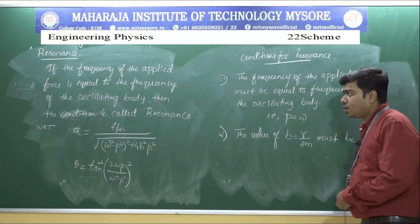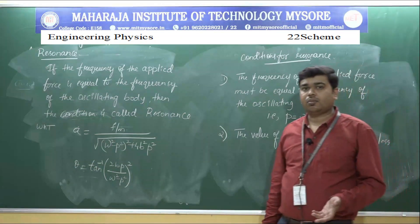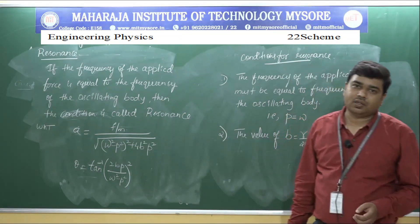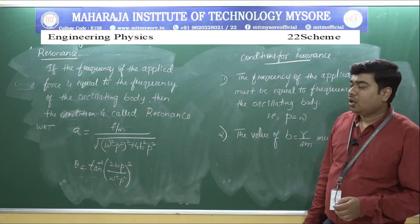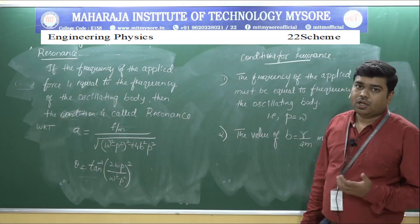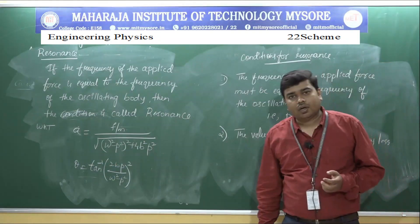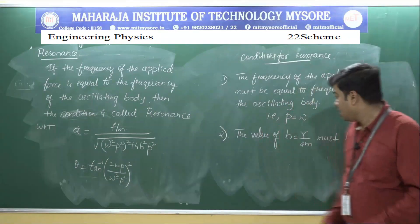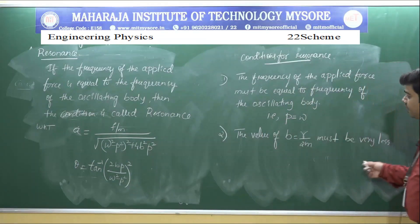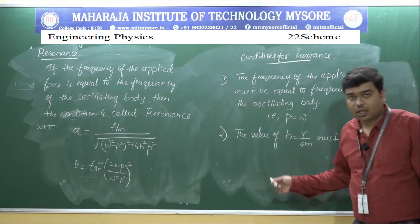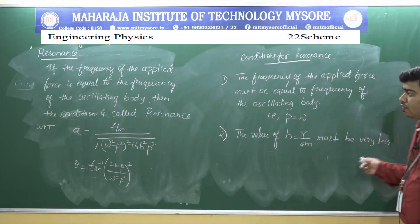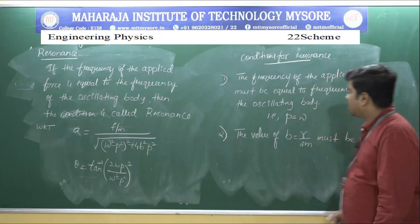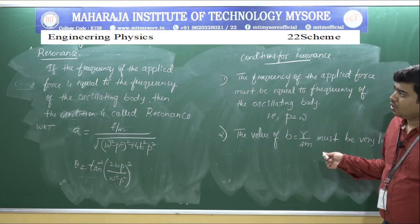These are the two main important conditions for resonance to take place. When resonance occurs, and b is very negligible, the amplitude of the oscillating body becomes maximum.